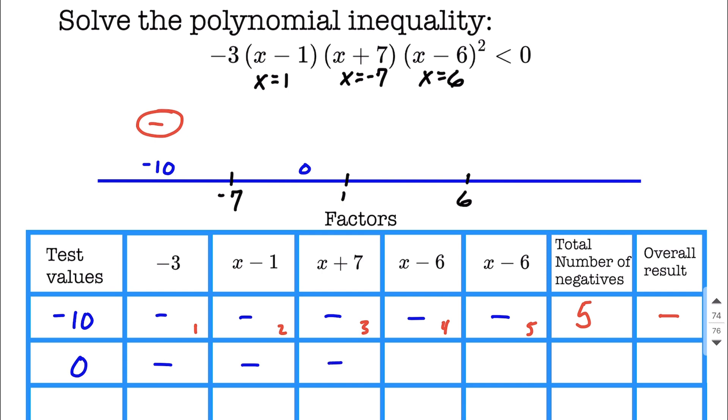0 plus 7, positive. 0 minus 6, negative. 0 minus 6, again, going to be negative. Counting them up, we have 1 negative, 2, 3, 4. 4 total negatives. Well, that's an even number of negatives. An even number of negatives multiplied together to give us a positive. So in this portion, it's going to be overall positive.